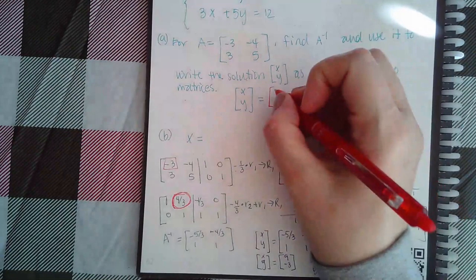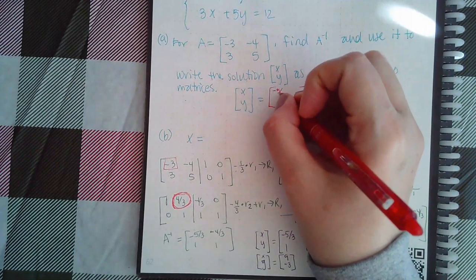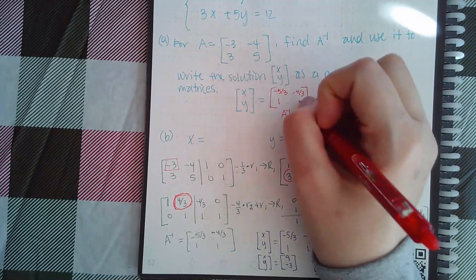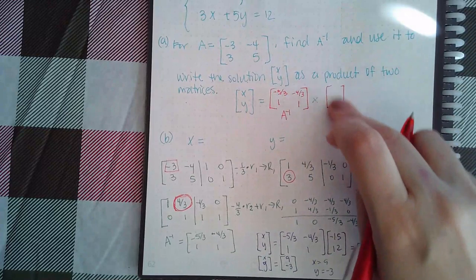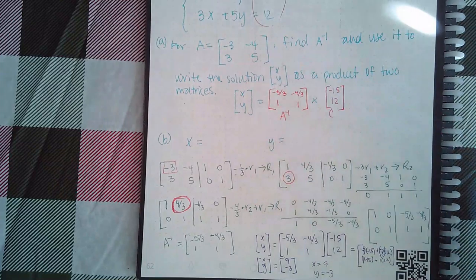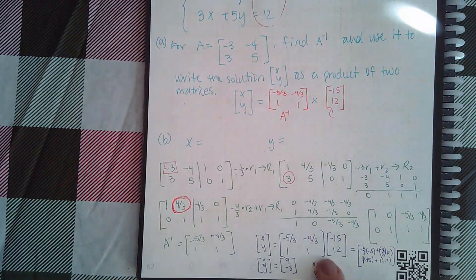So what I should have written inside Alex is negative five-thirds, negative four-thirds, one and one. And then the constant matrix comes from up here, which would have been negative 15 and 12. And so I did do that here.